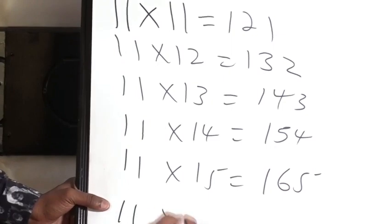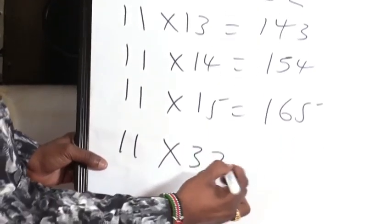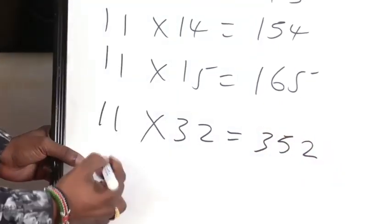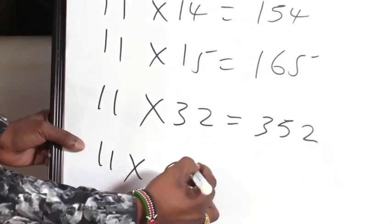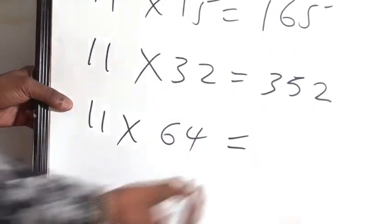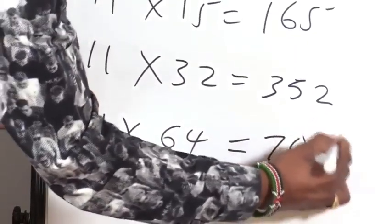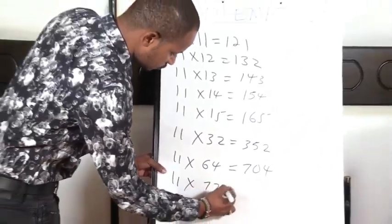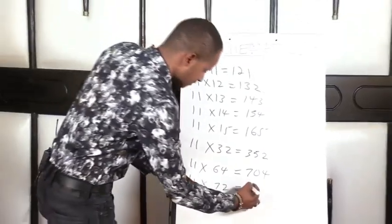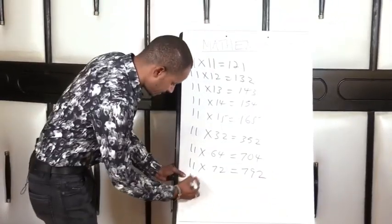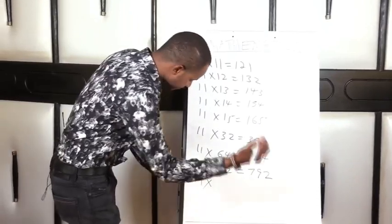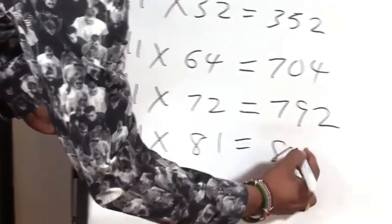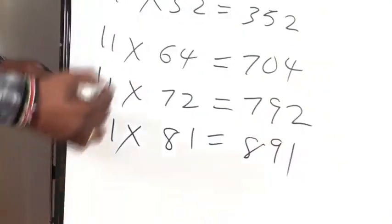What of 11 times 32 gives us 352. 11 times 64 gives us 704. 11 times 72 gives us 792. 11 times any random number 81 gives us 891.